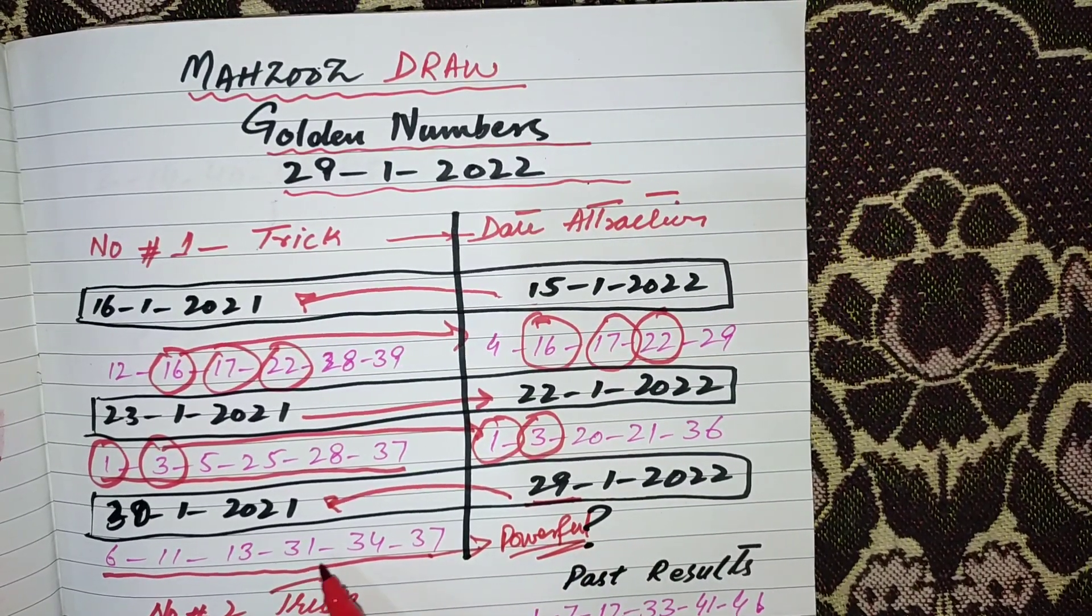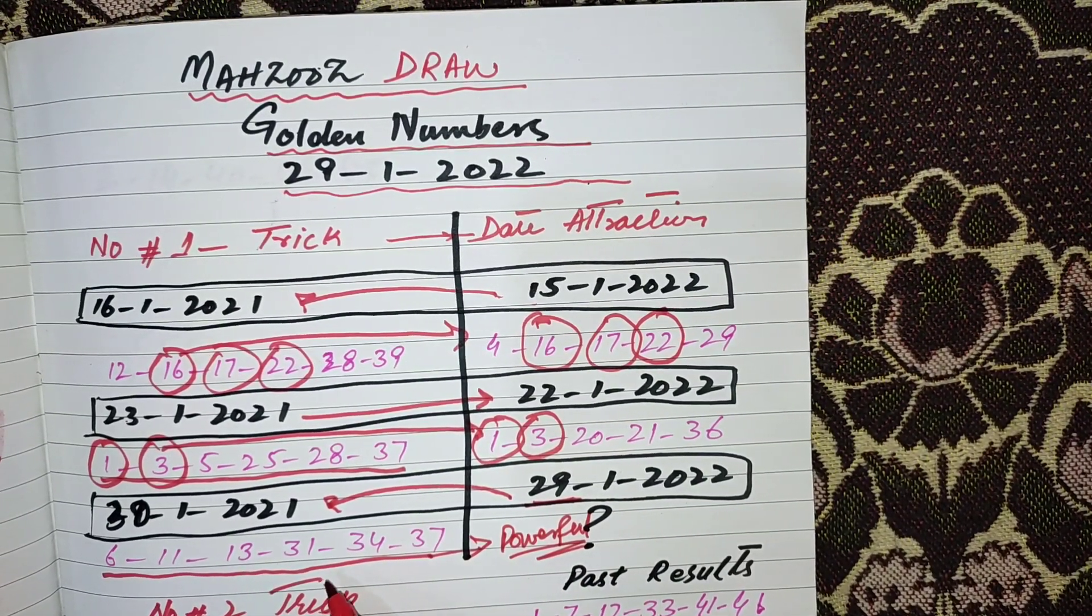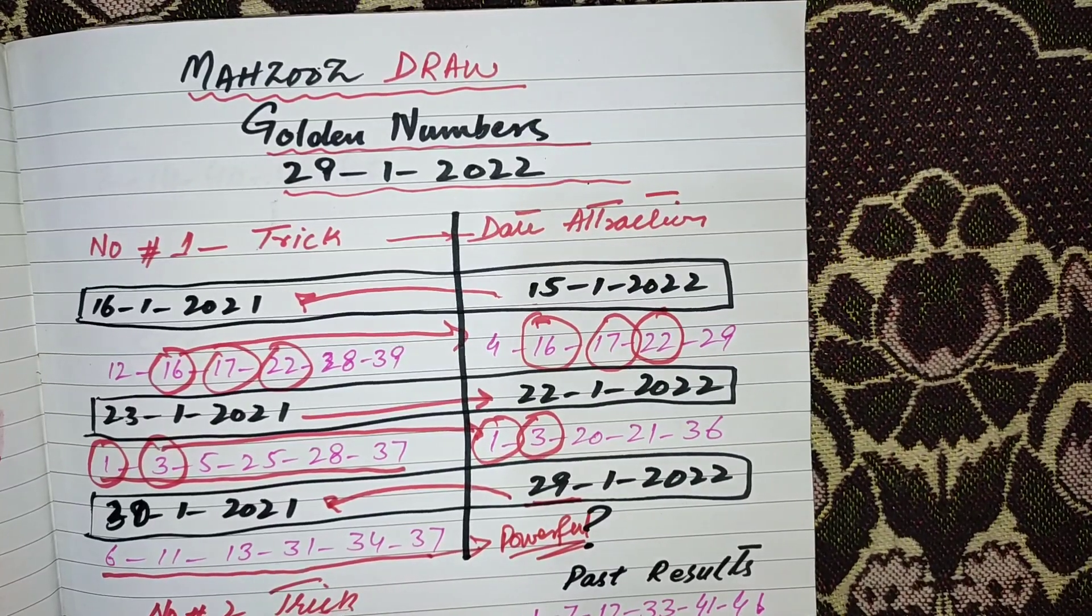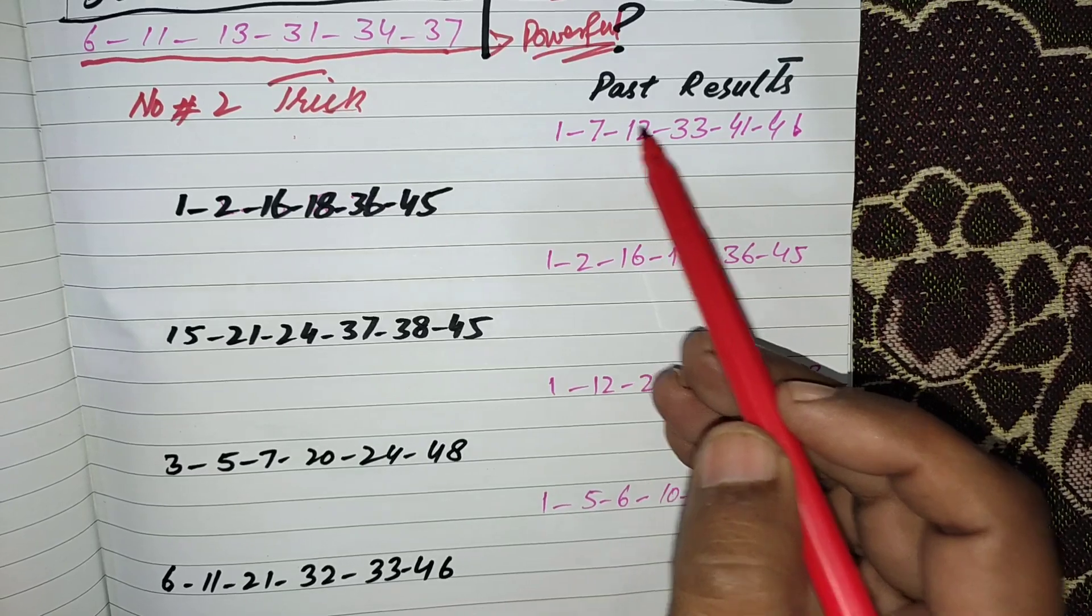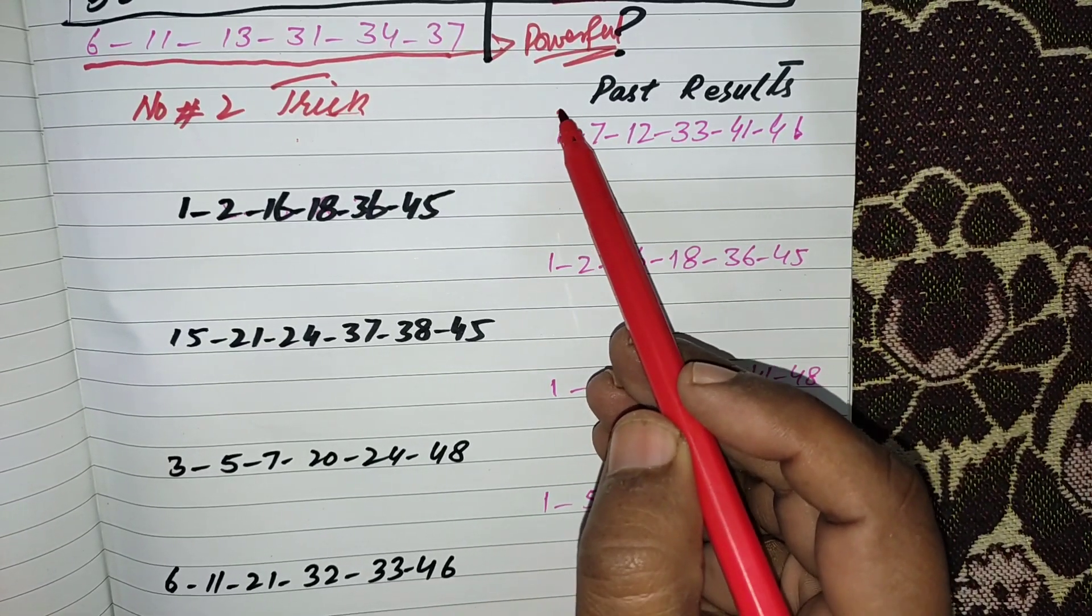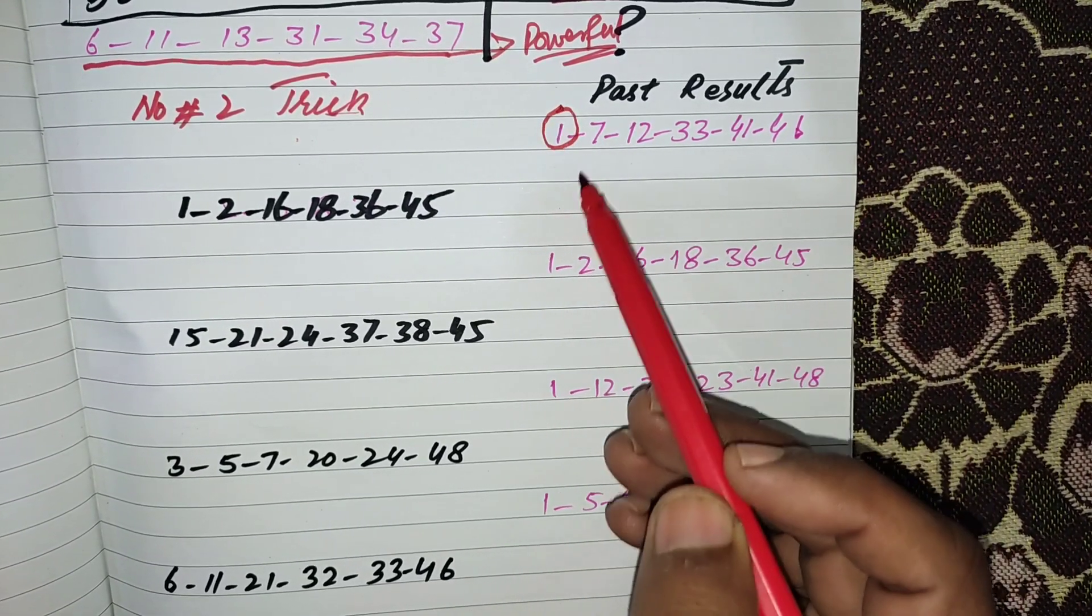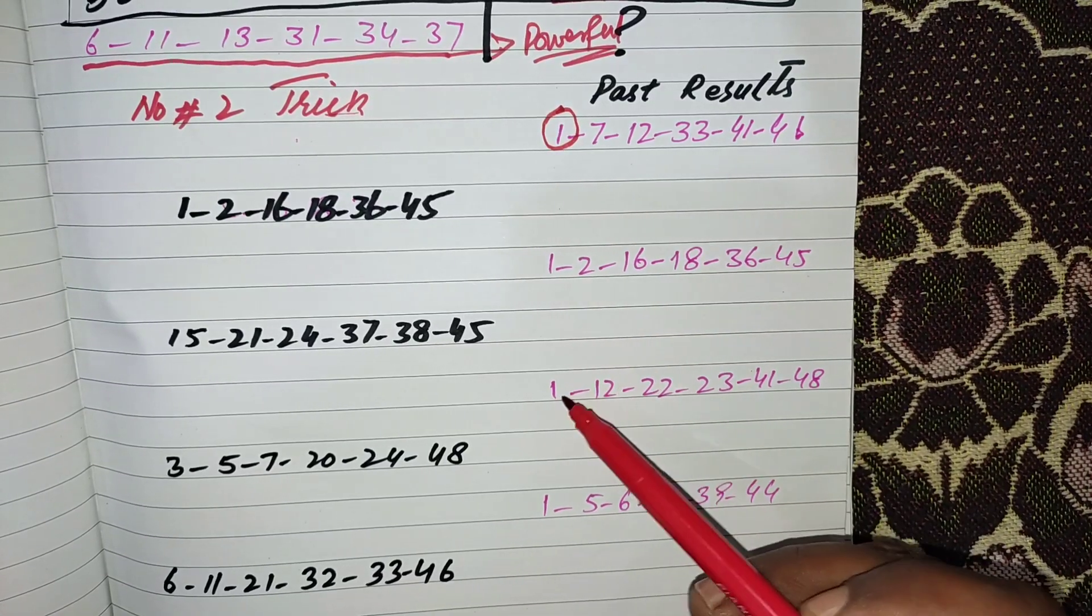You can select your numbers from these numbers if you like. If you don't like, you can leave it. Now move to the next trick, friends. These are the past results when the one number came as the first number. You can see 1, 1, 1, 1, 1.